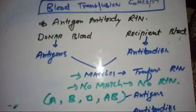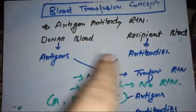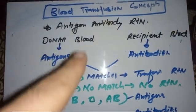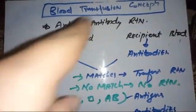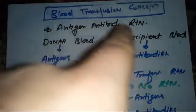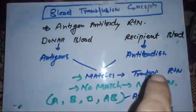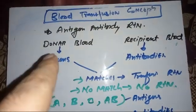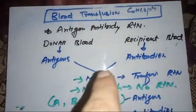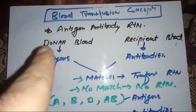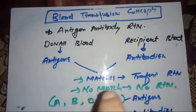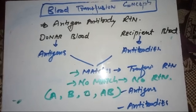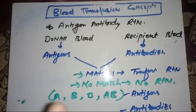In blood transfusion we have two things: the donor blood and the recipient blood. In the donor blood we look for the antigens, because we are introducing the blood and introducing the antigen. In the recipient blood we look for the antibodies. If the antigen and antibody match, there will be a transfusion reaction. If there is no match, there will be no reaction.